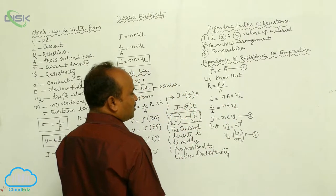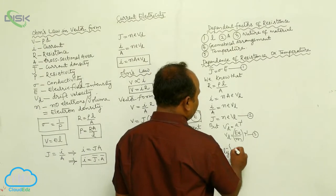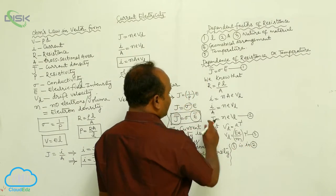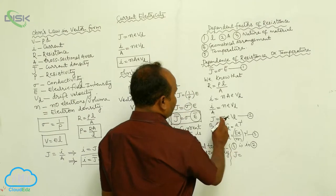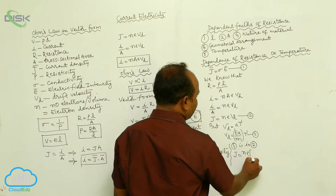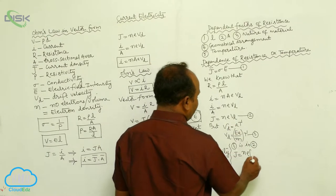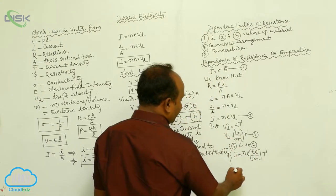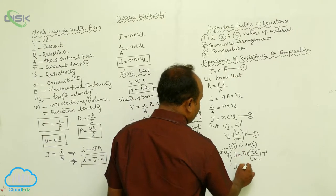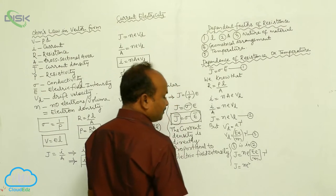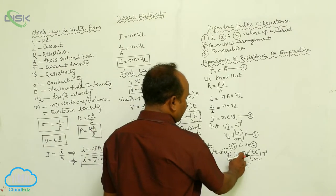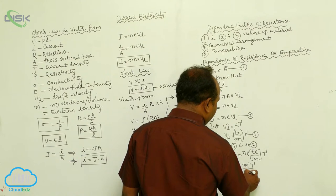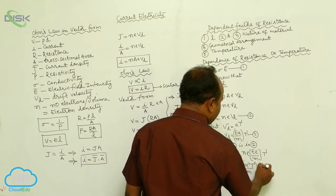Now equation 2, E is substituted in the third equation. Therefore, J is equals to N E V D, and V D is equals to E E by M into tau. On simplification, J is equals to N E square into tau by M into electric field intensity.